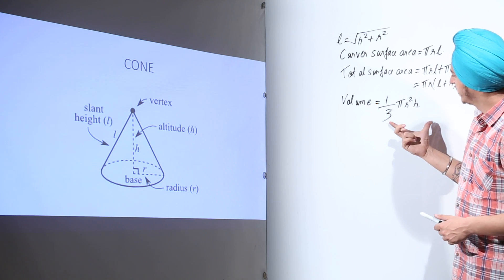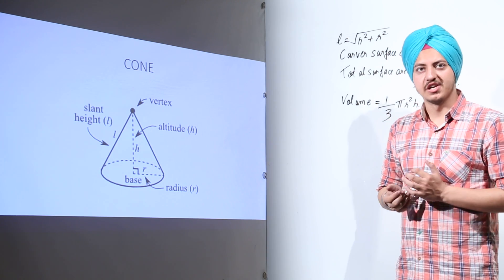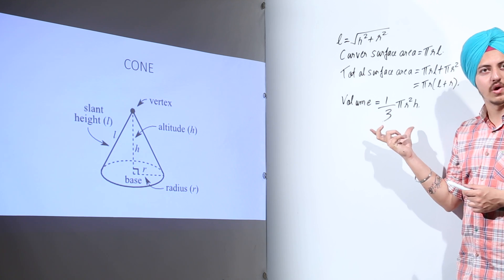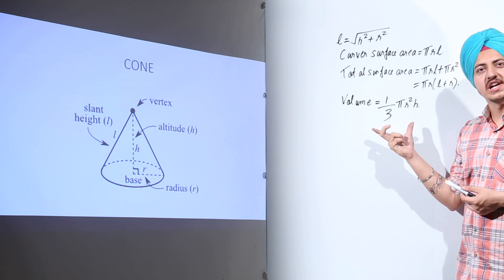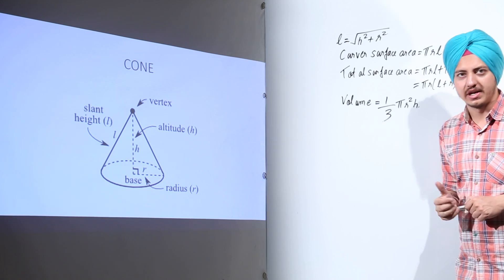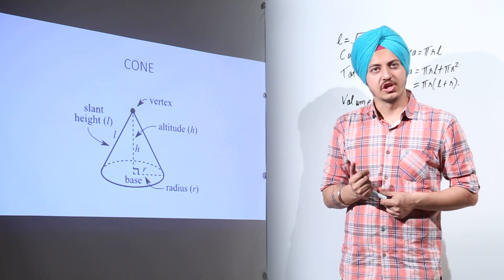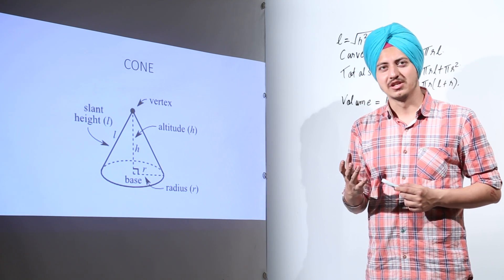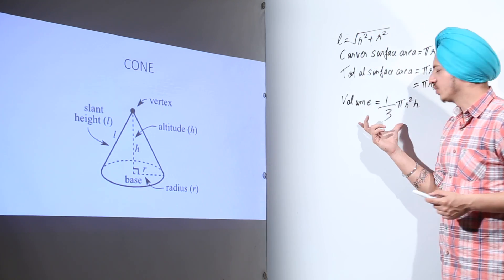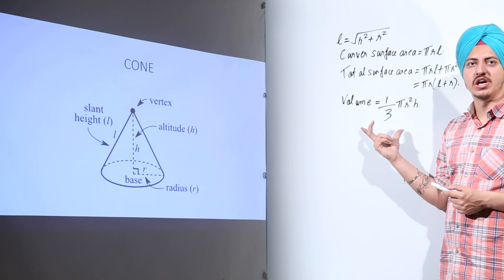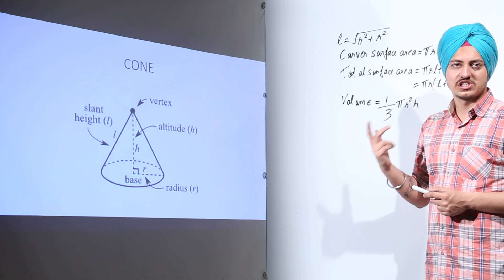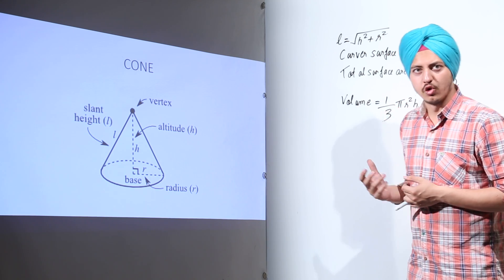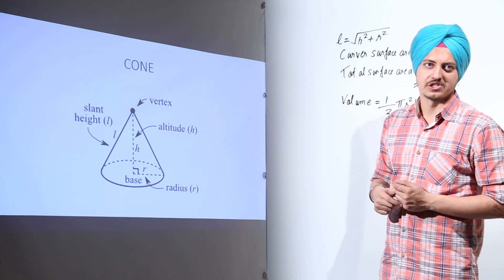If you remember the formula for the volume of a cylinder, which is πR squared H, you will notice that the volume of a cone is one-third πR squared H. So if a cylinder and a cone have the same radius and the same height, the cone will have a volume one-third that of the cylinder, or the cylinder will have a volume three times that of the cone. This relation may be useful in your examinations.